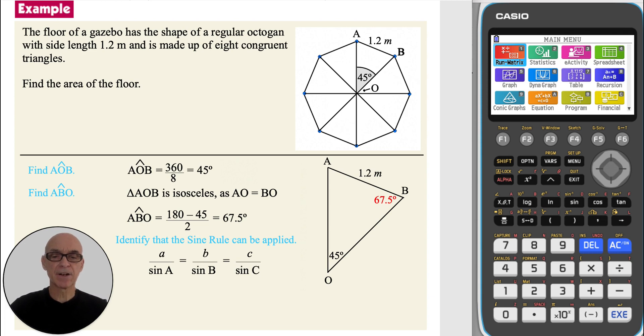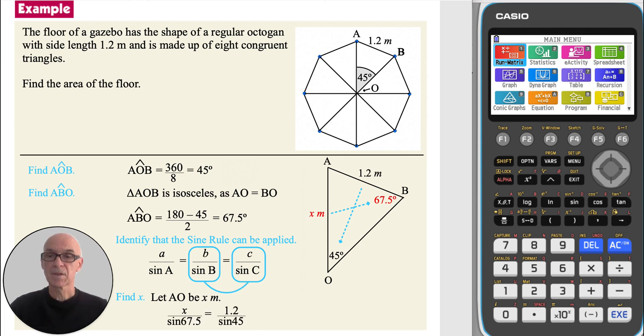Next, identify that the sine rule can be applied, letting AO be X meters. The angle paired with X is known, and another pair of side and angle are also known. Substituting in the given values.